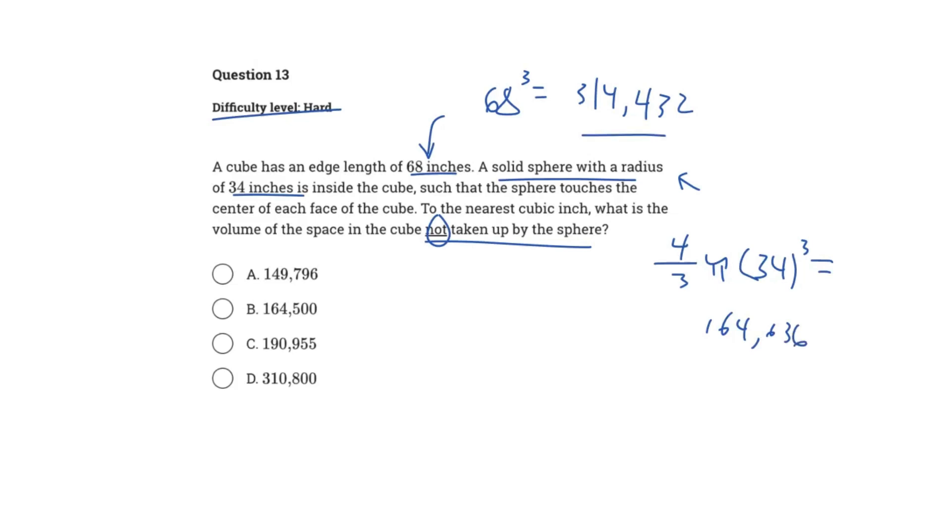So we've got our total volume and the volume of the sphere. If we want to find the volume inside the cube not taken up by the sphere, we can just subtract the sphere's volume from our total volume. Doing the math, we get answer choice A, 149,796, and that is our answer.